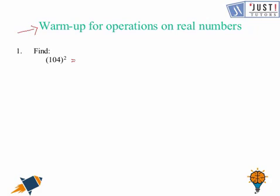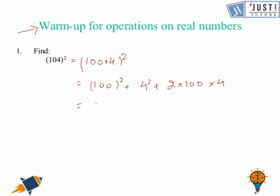So as you can see, it's 104 squared. We can write it as (100 + 4) whole square. Then we'll use the identity (a+b)² which gives us 100² + 4² + 2 × 100 × 4, which is equal to 10,000 + 16 + 800, which gives us 10,816.